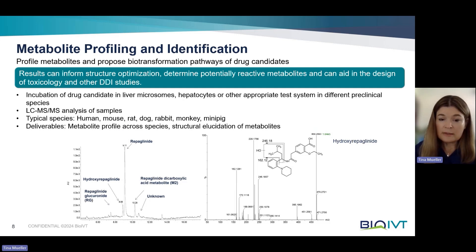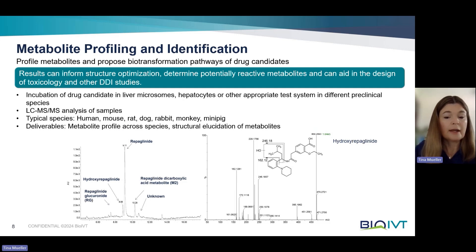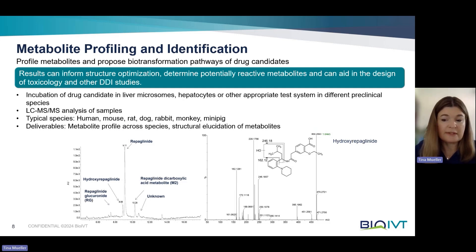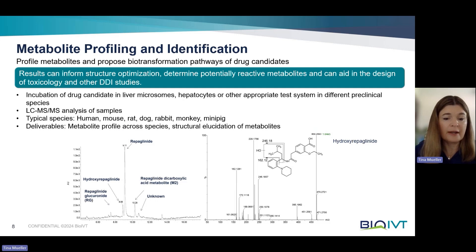The drug candidate is again incubated in a test system, most typically liver microsomes or hepatocytes, at a relatively high concentration. As with metabolic stability, several species are evaluated, such as human, mouse, rat, dog, rabbit, monkey, and/or minipig. The samples are then analyzed by LC-MS/MS to propose structures of the metabolites and create the metabolite profile for each of the species.